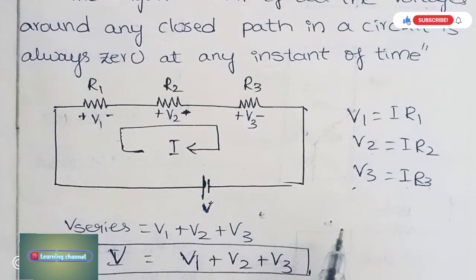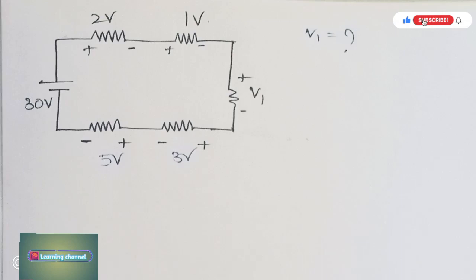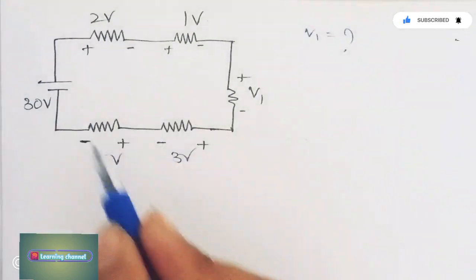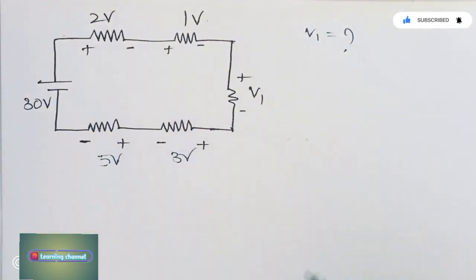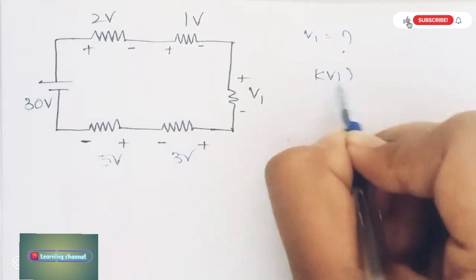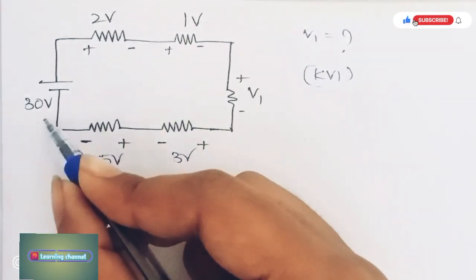Now let us see a few problems on KVL. This is a very simple problem using KVL. KVL states that all the voltages in a closed loop equal zero. Here they ask to find the value of V1.